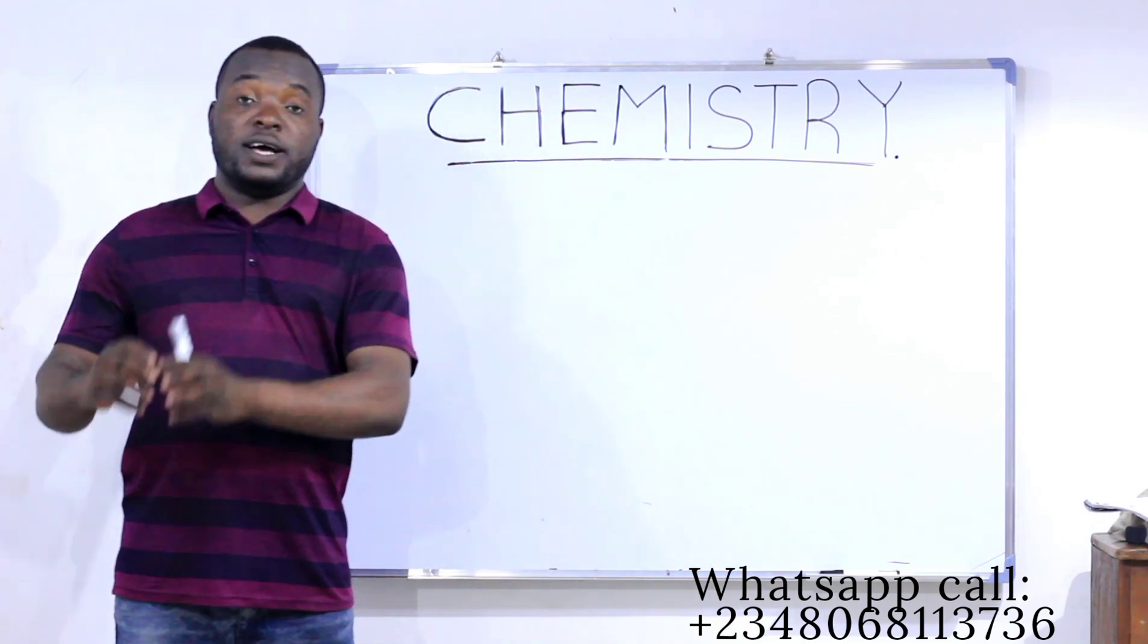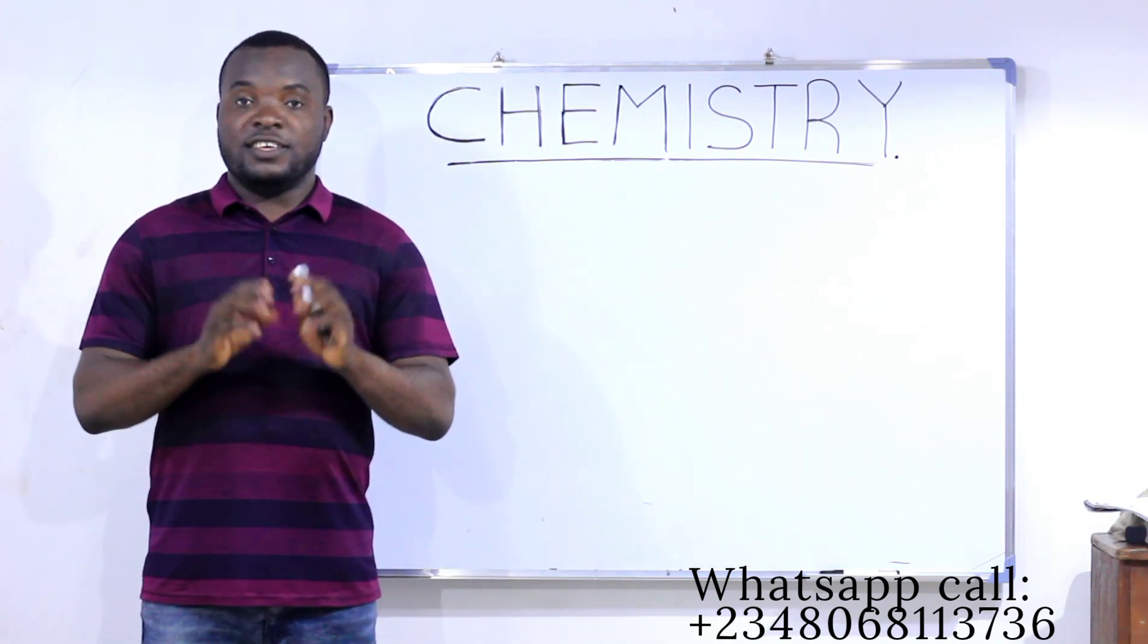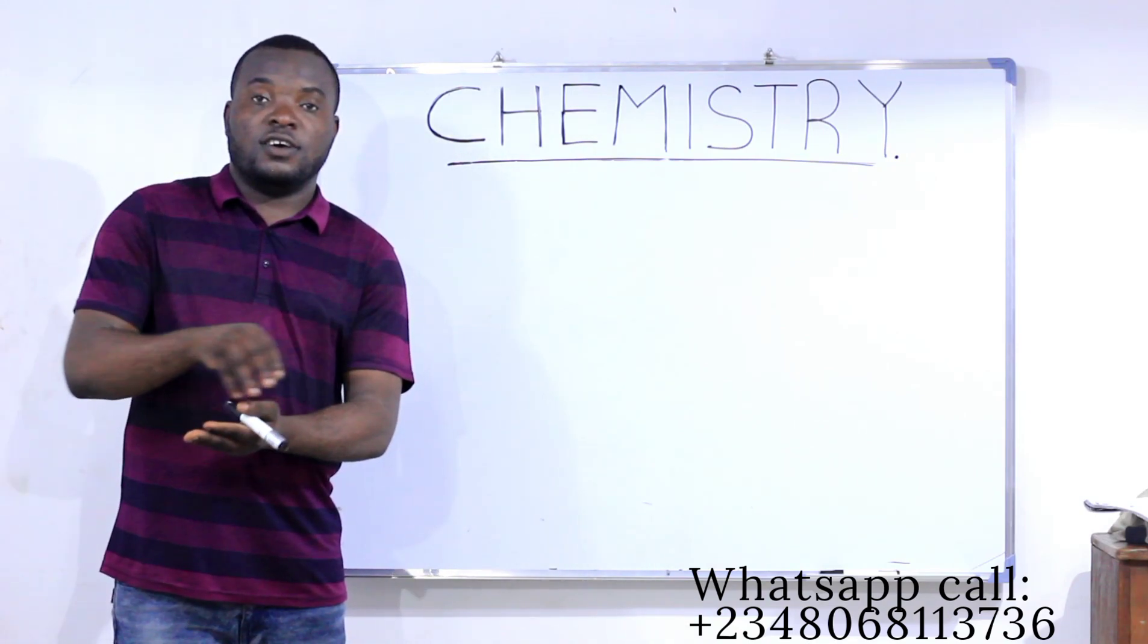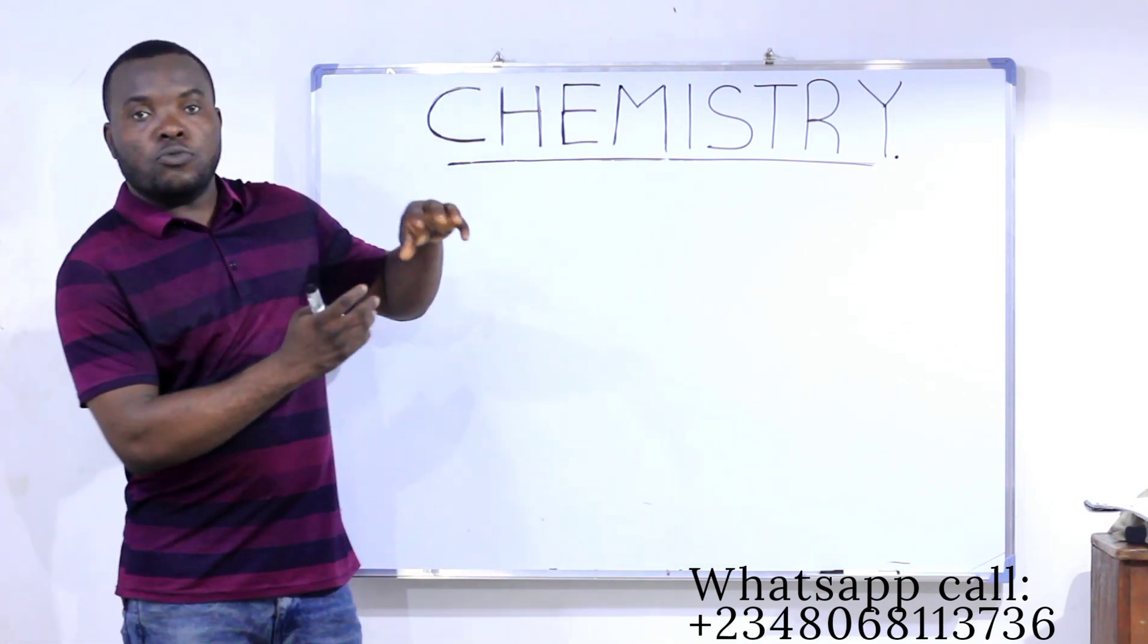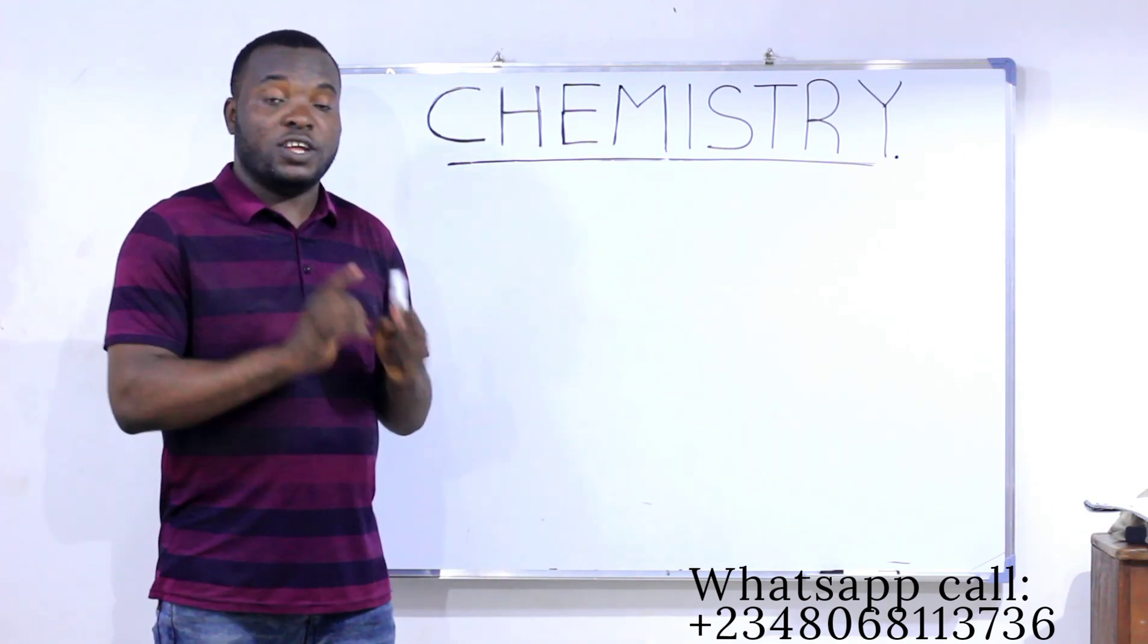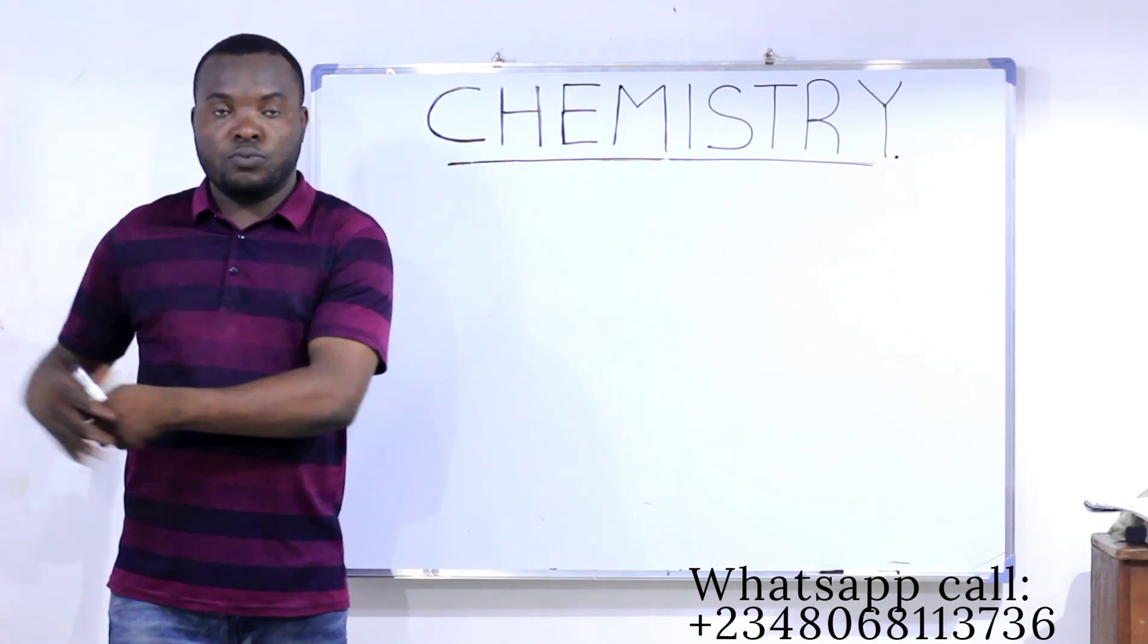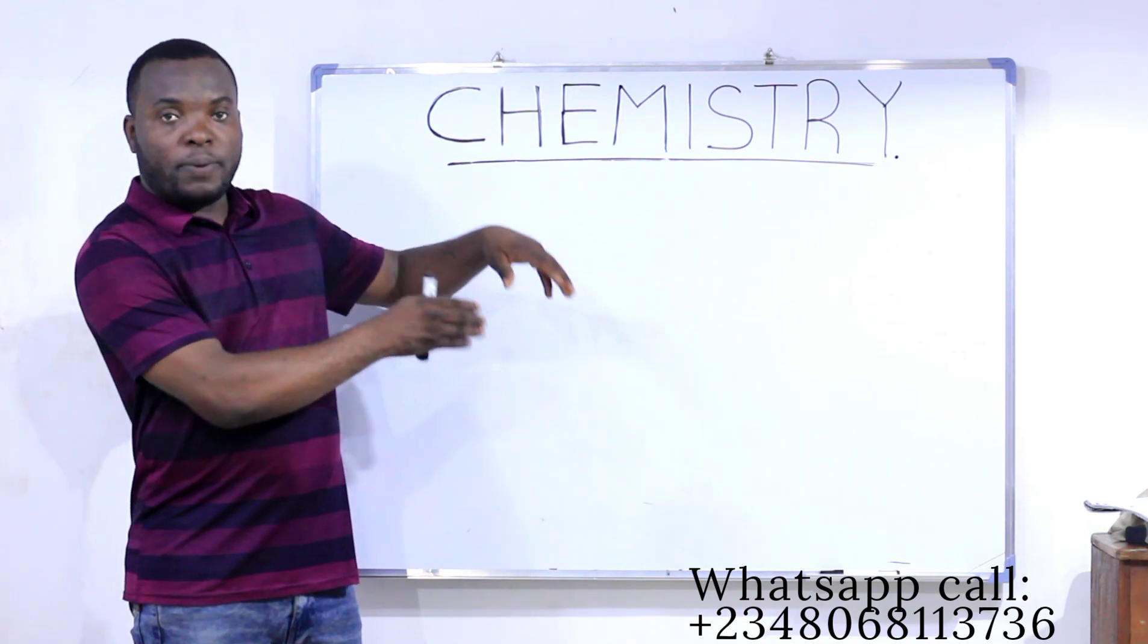The difference between mass concentration and molar concentration is this. In mass concentration, you are trying to tell us the number of grams of the substance contained in one dm³ or one meter. But in molar concentration, you are telling us the number of moles of the substance contained in one dm³. So mass concentration goes with grams per dm³ while molarity or molar concentration goes with moles per dm³.